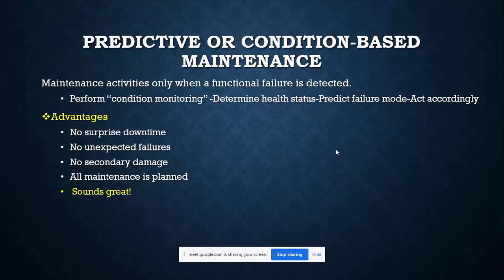Just as a doctor with a stethoscope checks whether your heart is functioning as expected and takes corrective measures if the lungs are not performing well, we look into the machine to find what exactly the potential failure is and how quickly it may occur. We do condition monitoring to assess the health status — whether the machine can survive another one or two years — and identify the failure mode, whether it is a bearing failure, looseness, or unbalance.